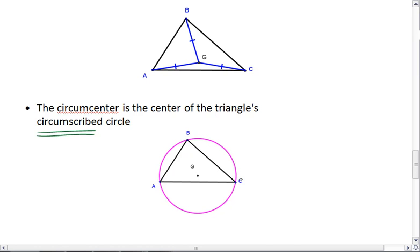But here we have the circumscribed circle for this triangle, and that's why G gets the name of circumcenter, because it's the center of the circumscribed circle.